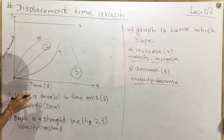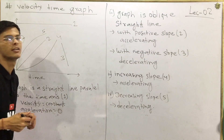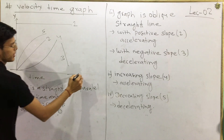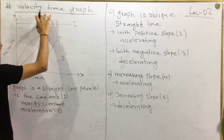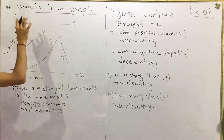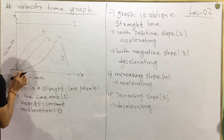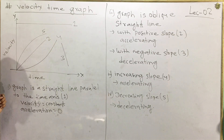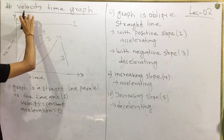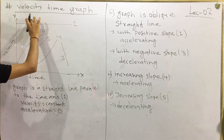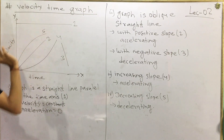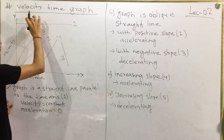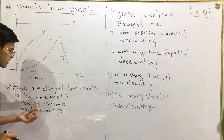Now we will look at the velocity time graph. We set up the y-axis and x-axis. When the velocity time graph is a straight line parallel to the time axis, the velocity is constant and acceleration is zero.